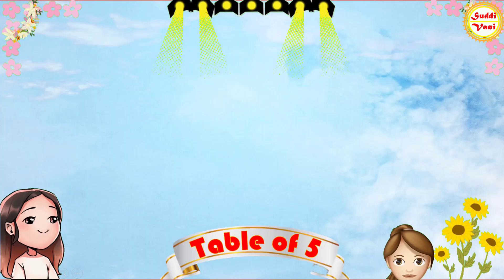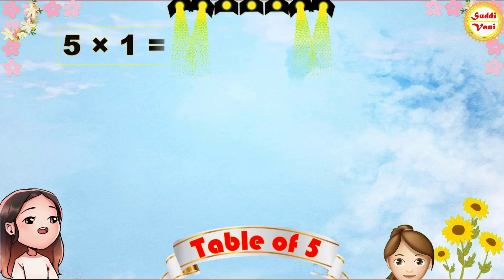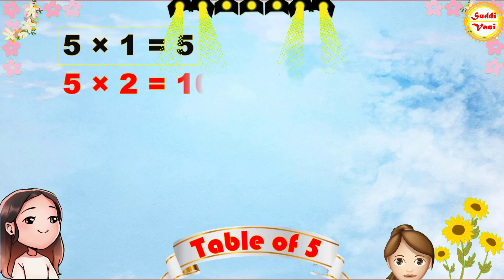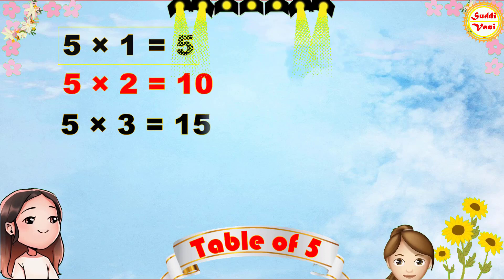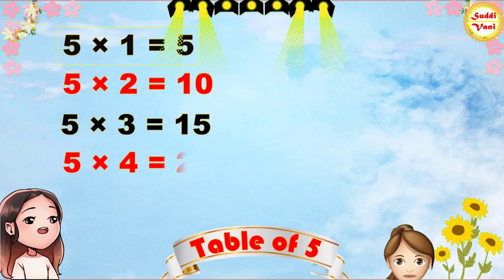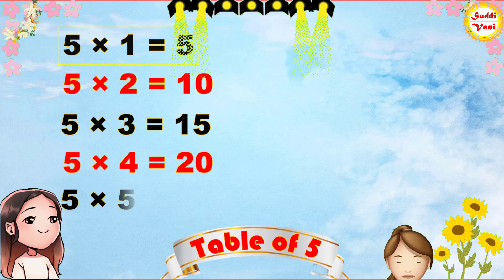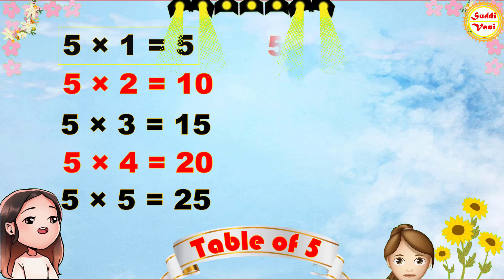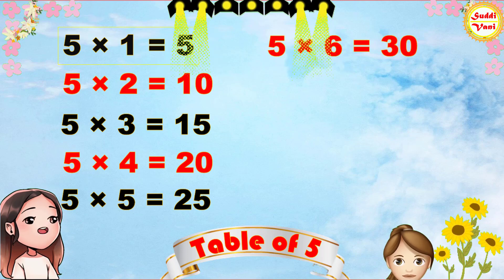Once again: 5 1s are 5, 5 2s are 10, 5 3s are 15, 5 4s are 20, 5 5s are 25, 5 6s are 30.